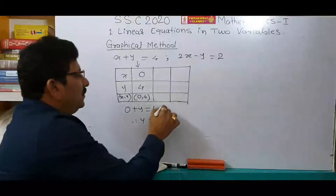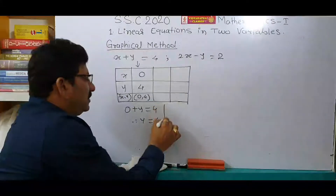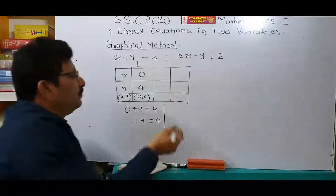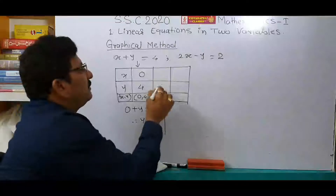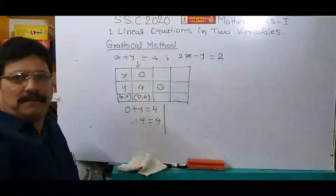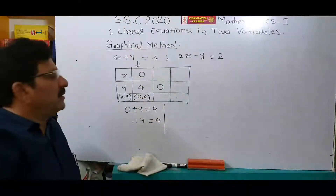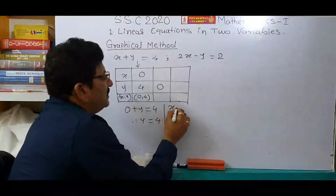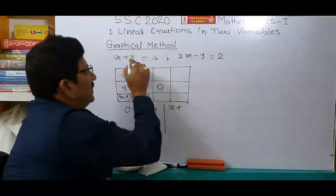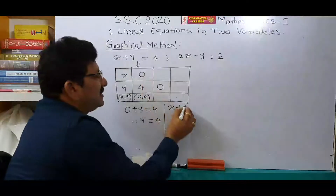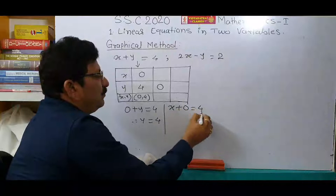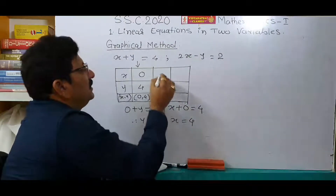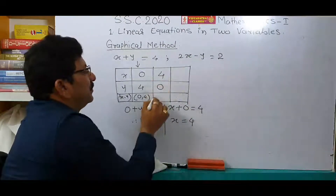Now, to find out the second ordered pair, put 0 in place of y. Then x plus 0 is equal to 4. Therefore, x is equal to 4. Write here 4. Your next ordered pair is (4, 0).